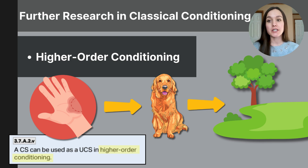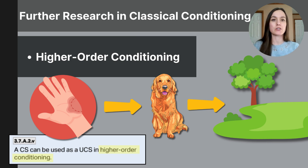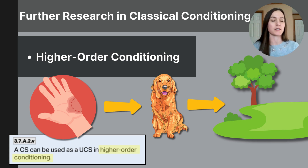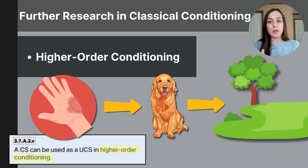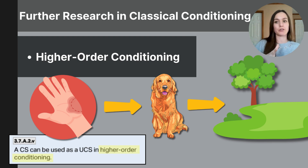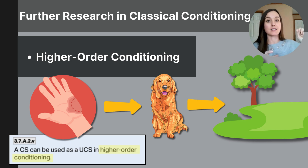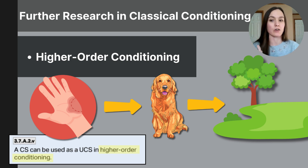Another important aspect of classical conditioning is higher order conditioning, also called second order conditioning. In Watson's study of Little Albert, he paired the loud sound with the white rat and conditioned Albert to have a fear response to furry white objects. Higher order conditioning would occur if the previously conditioned stimulus — the furry white rat — was paired with a neutral stimulus, such as a light flickering. Albert might then show a fear response to the light flickering, making it the second conditioned stimulus. This is second order or higher order conditioning.